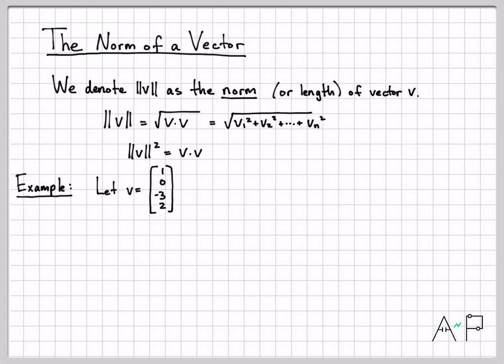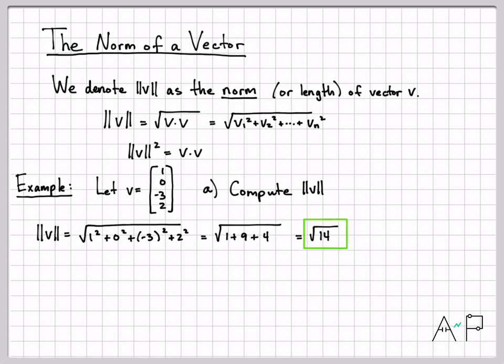Let's say that my vector v is (1, 0, -3, 2). We're going to compute the norm of v. The norm of v is going to be the square root of the root sum squared of each component: 1² + 0² + (-3)² + 2². Simplifying that, we get 1 + 0 + 9 + 4, which is 14. So the square root of 14 is what we get for the length or norm of the vector v.